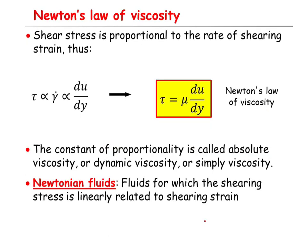We know that shear stress is proportional to the rate of shearing strain — that is tau, the shear stress, is proportional to gamma dot. Since gamma dot equals du/dy, tau is proportional to du/dy. The constant of proportionality is called absolute viscosity, or dynamic viscosity, or simply viscosity. So tau equals mu times du/dy, and that is called Newton's law of viscosity.